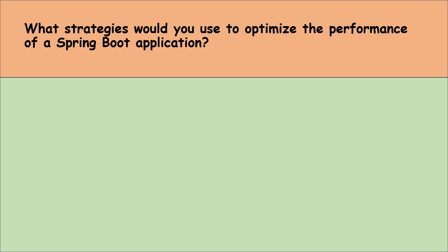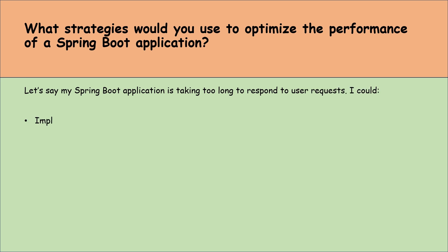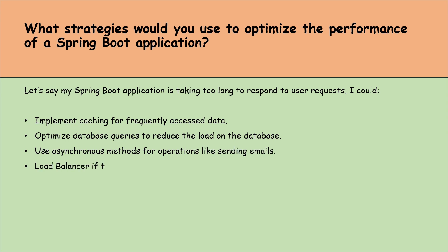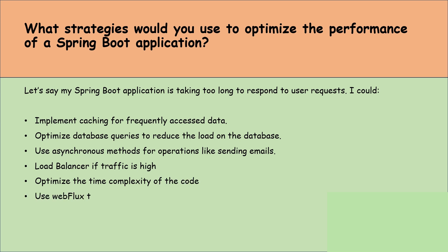What strategies would you use to optimize the performance of a Spring Boot application? If my Spring Boot application is taking too long to respond to user requests, I could: implement caching for frequently accessed data; optimize database queries to reduce load on the database; use asynchronous methods for operations like sending emails; use a load balancer if traffic is high; optimize the time complexity of the code; and use WebFlux to handle a large number of concurrent connections.